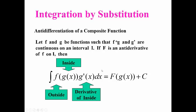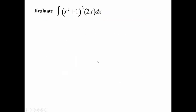In my first video I did just one or two simple examples, so we'll start with easy ones and work into harder ones. Evaluate the integral of (x² + 1)² times 2x. You have something on the inside of that square. The derivative of x² + 1 is 2x — that's the key signal that it's going to be the substitution method.